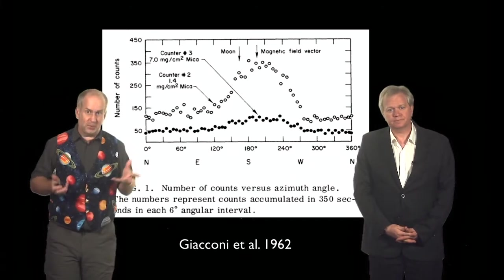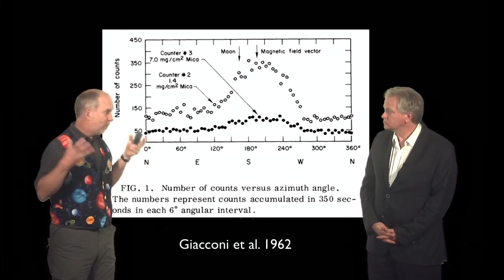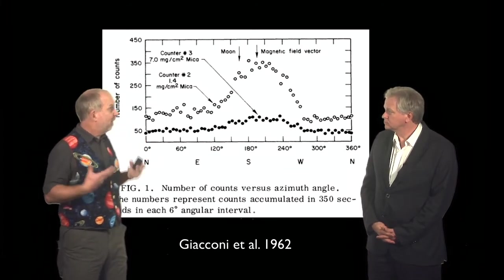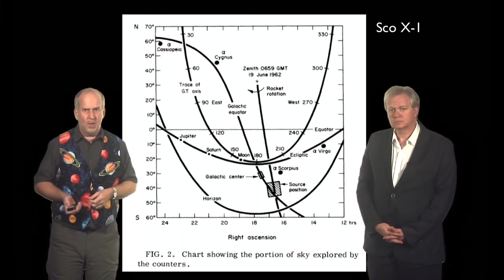So they picked up a signal, a really strong signal, such a strong signal that the X-rays from the signal, whatever it is, are enough to actually appreciably ionize the upper atmosphere. But it's not coming from the moon. Where is it coming from?